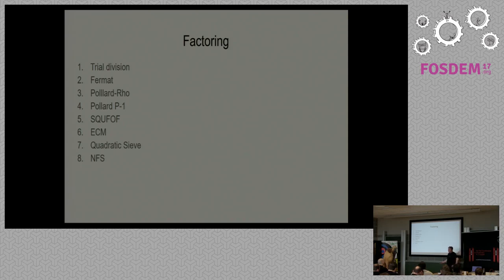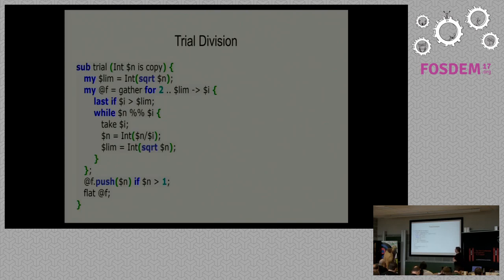A couple of methods for factoring: trial division is very straightforward. Fermat, busy guy, also came up with a method for factoring. Pollard has his rho method and P-1, both very common. Square form factorization, ECM, quadratic sieve, and NFS are all commonly used. NFS is generally a PhD-level project — I think there are only two implementations out there. For trial division, an important optimization is that when you find a factor, your new composite is smaller, so you should redo the limit. A lot of examples don't do this and end up doing a lot more work. This is useful for small numbers.